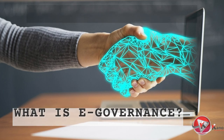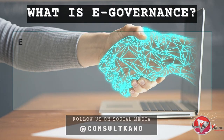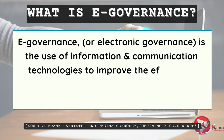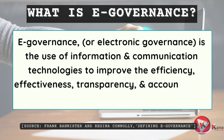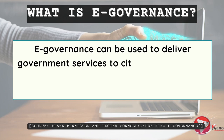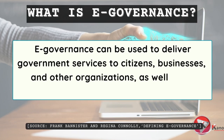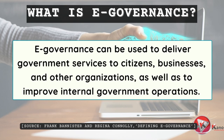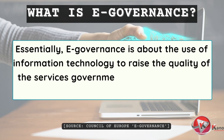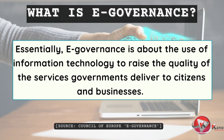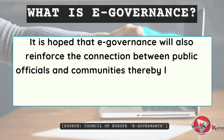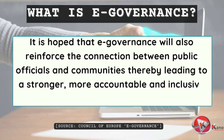Let's get into today's video by first explaining what we mean by e-governance. E-governance, or electronic governance, is the use of information and communication technologies to improve the efficiency, effectiveness, transparency, and accountability of government processes. E-governance can be used to deliver government services to citizens, businesses, and other organizations, as well as to improve internal government operations. Essentially, e-governance is about using information technology to raise the quality of the services governments deliver to citizens and businesses. It is hoped that e-governance will also reinforce the connection between public officials and communities, thereby leading to a stronger, more accountable, and inclusive democracy.